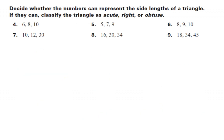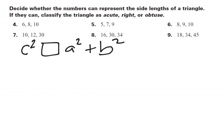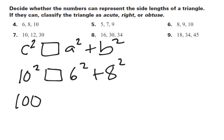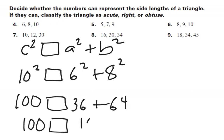The question becomes: which one is supposed to be C? Since C has to represent the hypotenuse, it must be the longest side. So C needs to be the biggest of the three numbers. Let's start with problem four: side lengths 6, 8, and 10. Using 10 for C squared, I've got C squared, a box for the symbol, and then A squared plus B squared. Substituting: 10 squared gives 100, and 6 squared plus 8 squared gives 36 plus 64, which adds up to 100. So I put an equals in my box. Since I got an equals, I know that this is a right triangle.